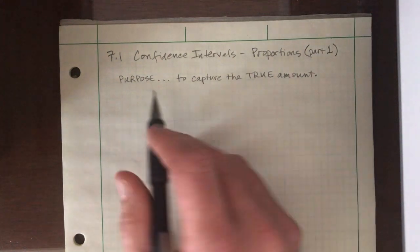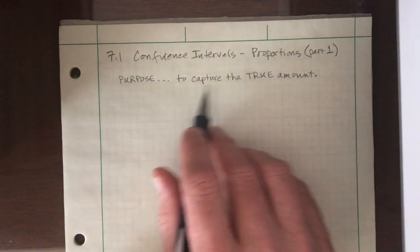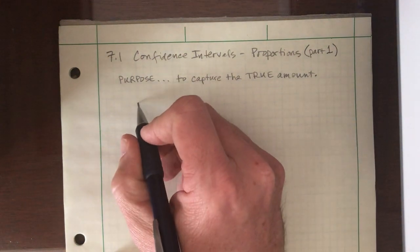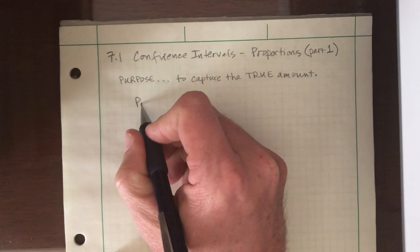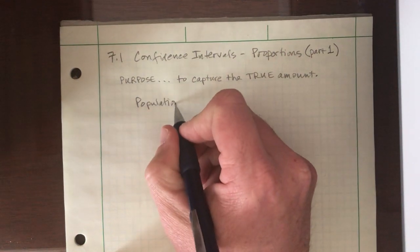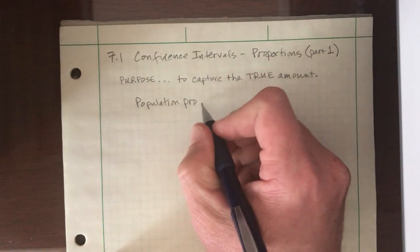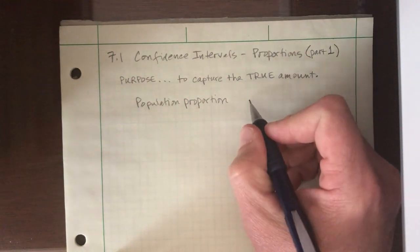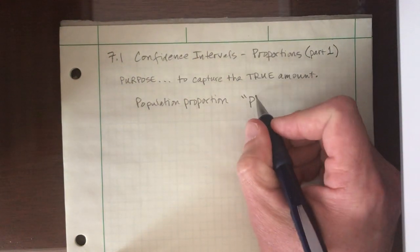So let's get some vocabulary and symbols down. When we talk about the true proportion, I'm talking about the true population proportion. And the symbol we give for that is just the letter P.